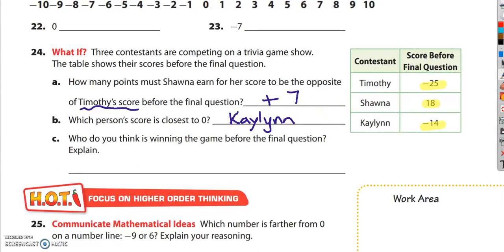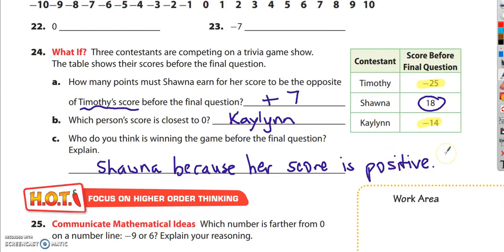Question C says, who do you think is winning the game before the final question? Well, these two scores are both below 0, so they're probably not winning the game. This person's score is above 0, it's the only one that's positive. I think it's Shauna. And it says explain, and I would say because her score is positive. The other two scores are negative, so therefore she's winning.